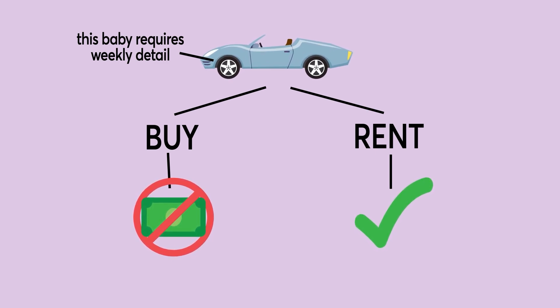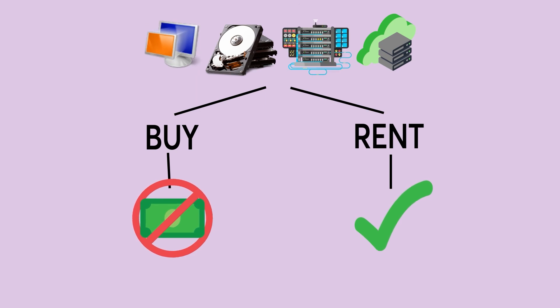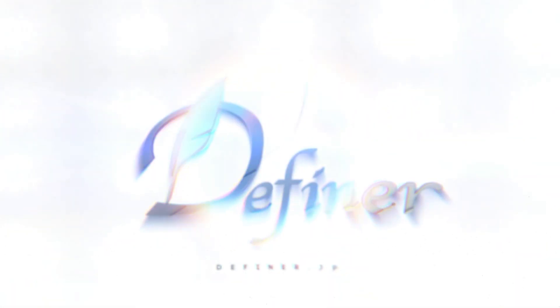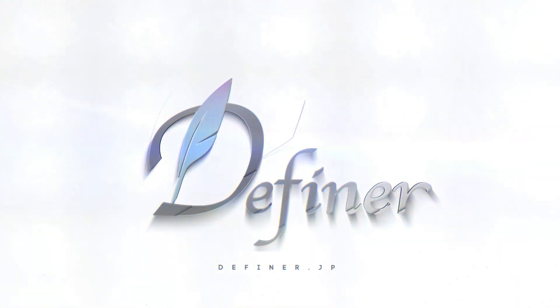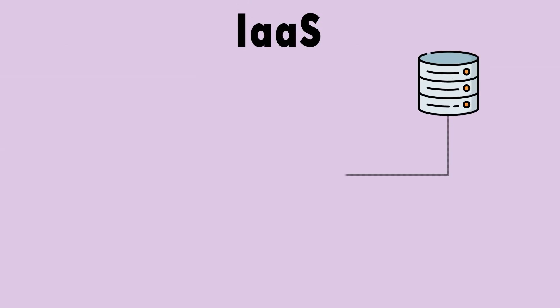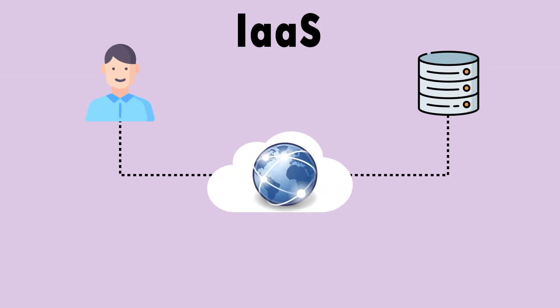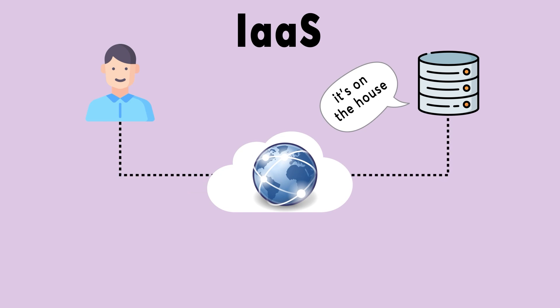Now imagine in place of a car, you need state-of-the-art expensive computer equipment — that's where you need Infrastructure as a Service. In a nutshell, IaaS provides you with hardware over the internet, so that you don't have to pay up for all that expensive equipment.